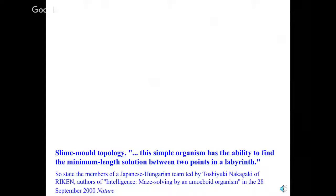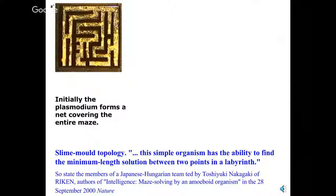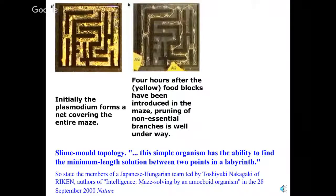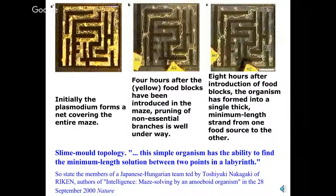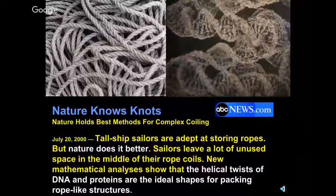Here's something simple: slime mold topology. This simple organism has the ability to find the minimum-length solution between two points in a labyrinth. Initially the slime mold covers the entire maze, but after a while it starts pruning, and eight hours after introduction it has found the minimum solution. Slime mold knows its calculus.